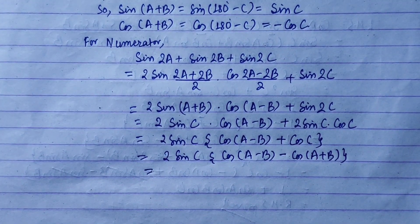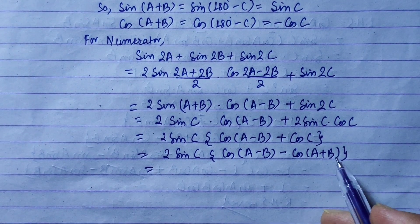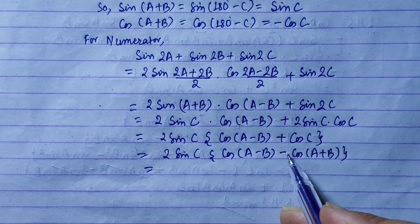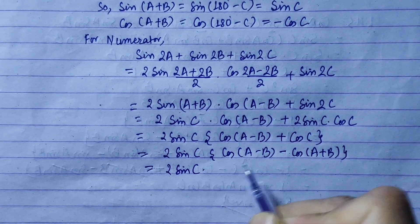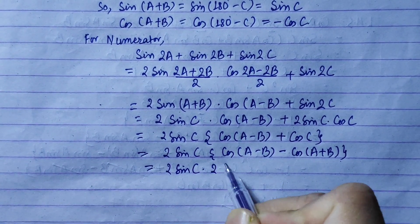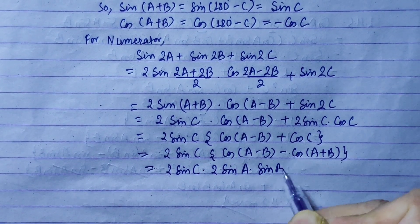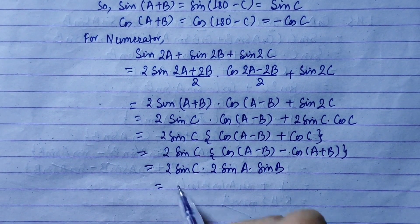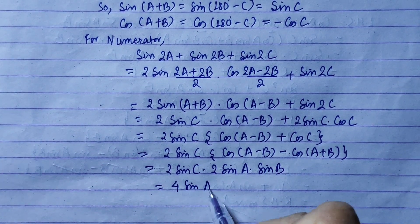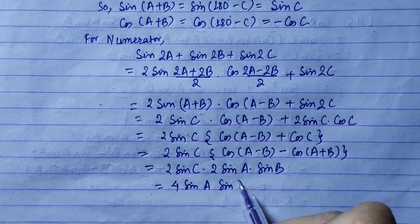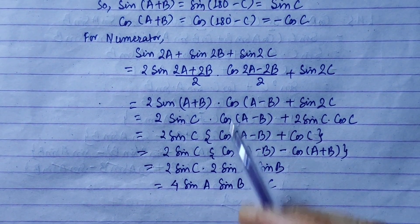Using the transformation formula: cos(a−b) − cos(a+b) = 2·sinA·sinB. So the numerator becomes 2·sinC · 2·sinA·sinB = 4·sinA·sinB·sinC.